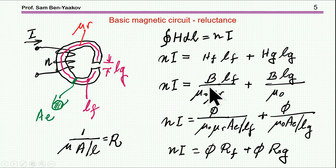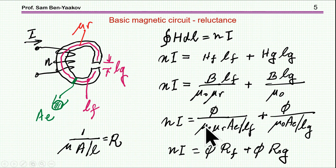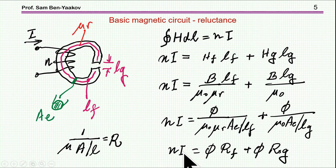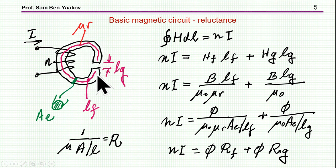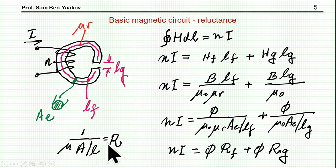Replacing H by B over mu, I get this expression. Then replacing B by phi over A — flux over area — I get this equation. Defining the reluctance terms, I get the equation saying that N times I (the MMF) equals flux times reluctance, summed for each section. The flux in this case is the same throughout, because we have the same flux passing through the body, neglecting fringing effects and other secondary effects. The reluctance definition is this expression here.